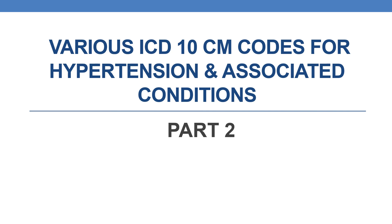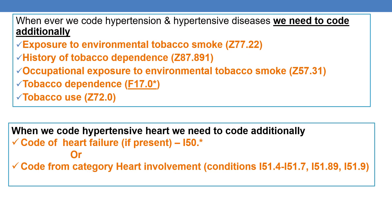Hello everyone. Now let us discuss about various ICD-10-CM codes for hypertension and associated conditions, part 2. Whenever we code hypertension and hypertensive diseases, we need to additionally identify whether the patient has exposure to environmental tobacco smoke, a history of tobacco dependence, occupational exposure to environmental tobacco smoke, current tobacco dependence, or tobacco use. Respectively, you need to code these as secondary diagnoses.